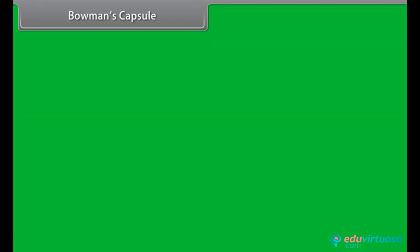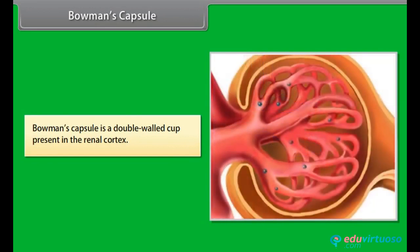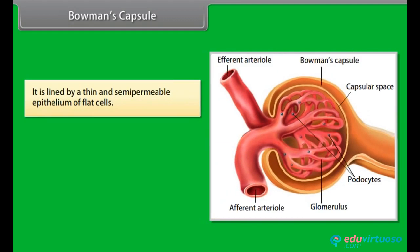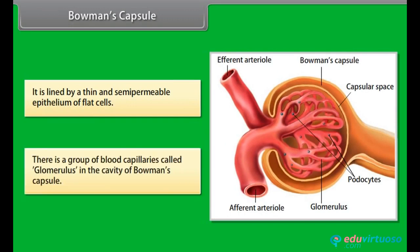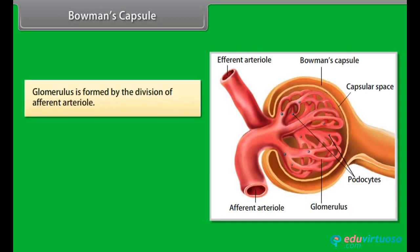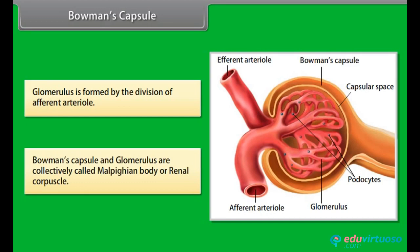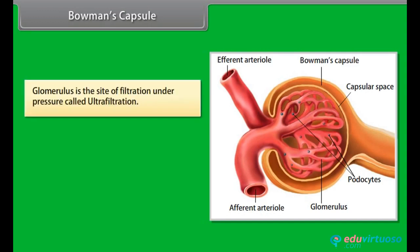Bowman's capsule is a double-walled cup present in the renal cortex. It is lined by a thin and semi-permeable epithelium of flat cells. There is a group of blood capillaries called the glomerulus in the cavity of Bowman's capsule. Bowman's capsule and glomerulus are collectively called the Malpighian body or renal corpuscle. The glomerulus is the site of filtration under pressure, called ultrafiltration.